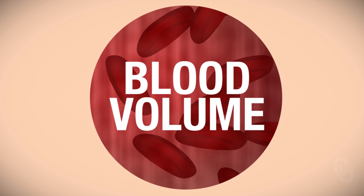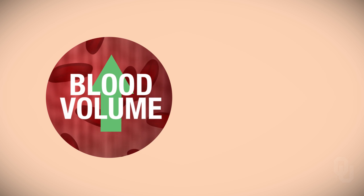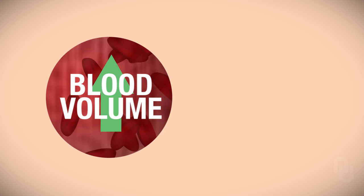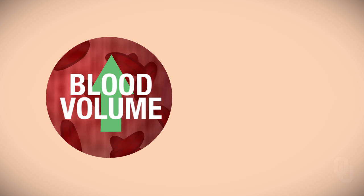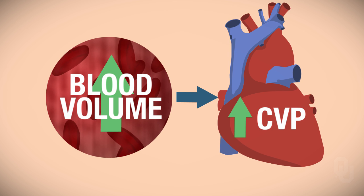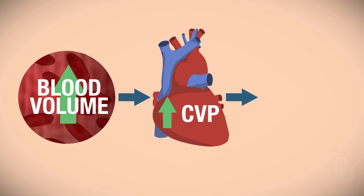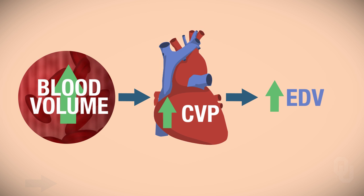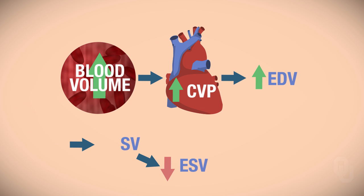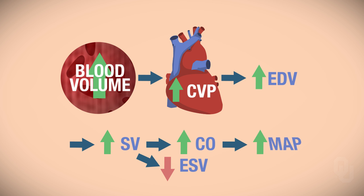The third factor is blood volume. If you have an increasing blood volume, your central venous pressure is going to be higher since there is a greater volume of blood. That will increase end diastolic volume, decrease your end systolic volume, increase stroke volume and cardiac output, and then increase mean arterial pressure.